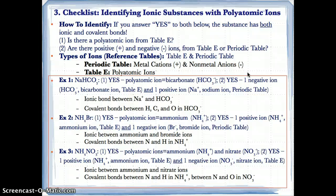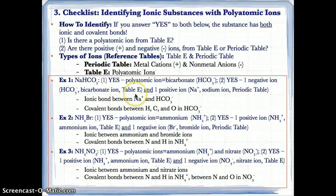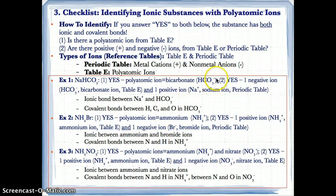NaHCO3: is there a polyatomic ion? Yes — the bicarbonate ion HCO3− from Table E. Are there positive and negative ions? Yes: the negative ion is HCO3− (bicarbonate) from Table E, and the positive ion is Na+ (sodium) from the periodic table. Since both conditions are fulfilled, we have both ionic and covalent bonds. The ionic bond is between Na+ and HCO3−. The covalent bonds are between H, C, and O within HCO3−, because they are all non-metals.